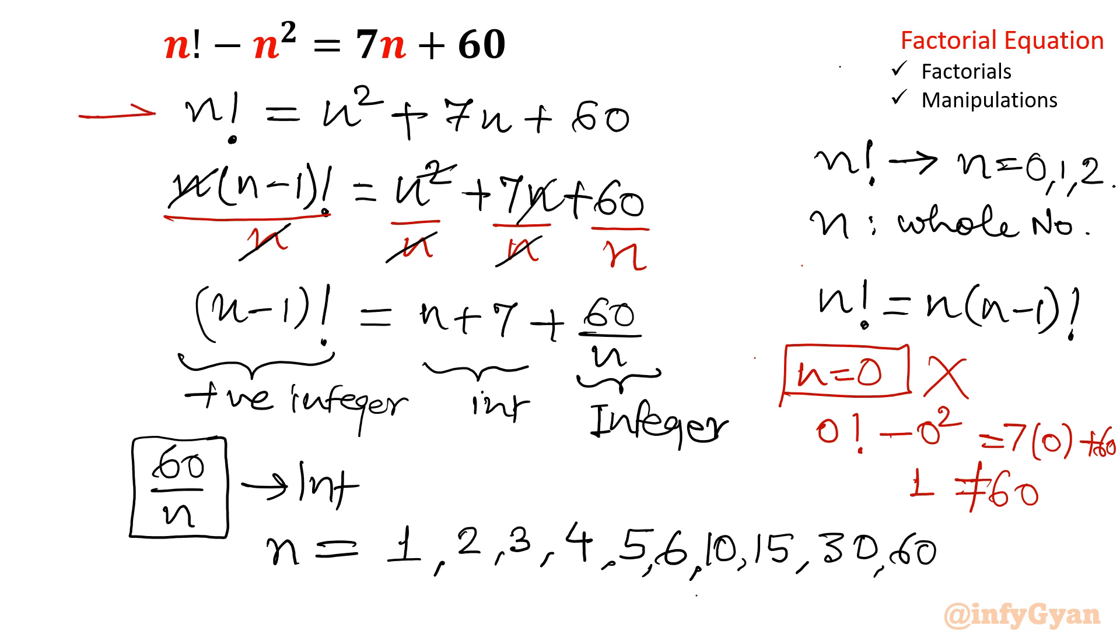in this equation if you will check then n factorial because of this term is positive, so n factorial must be greater than 60. We will write from this equation that n factorial must be greater than 60.